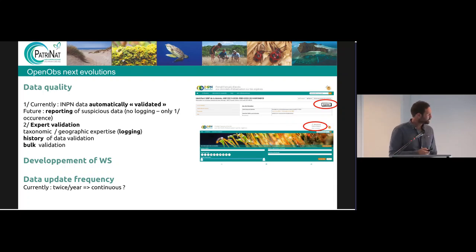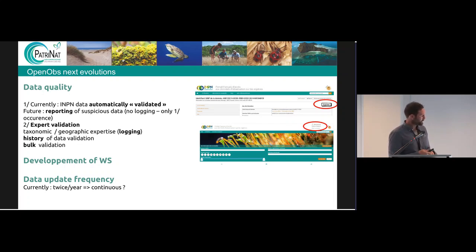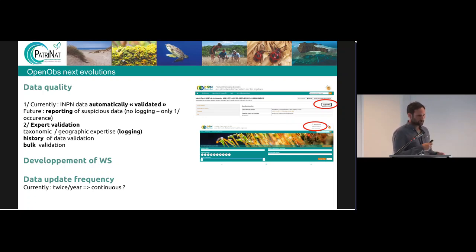For the next evolutions we would like to add to OpenObs: first, reporting of suspicious data that anybody could do without logging in. We would also like to add expert validation, so according to your field or geographical knowledge, you could log in and say whether data is valid or not, and we could keep a track of the full history of the record.